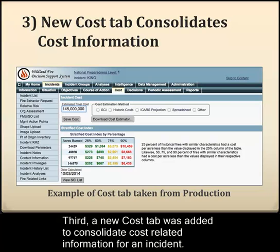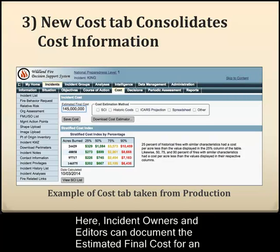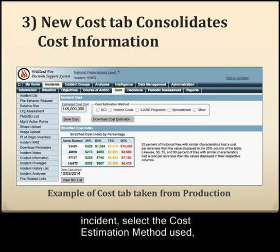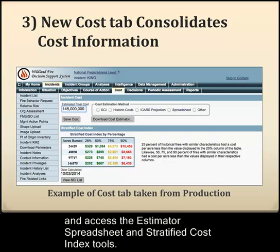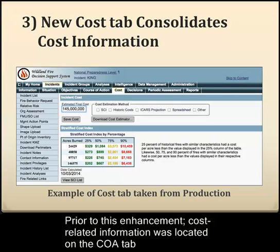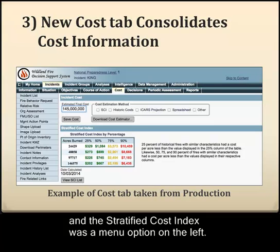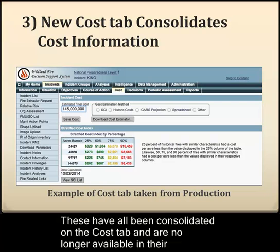Third, a new cost tab has been added that consolidates all cost-related information for an incident. Incident owners and editors can document the estimated final cost, select the cost estimation method used, and access the estimator spreadsheet and stratified cost index tools. Prior to this enhancement, cost-related information was located on the course of action tab, and the stratified cost index was a menu option on the left.